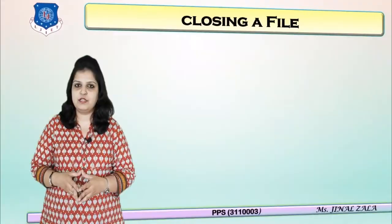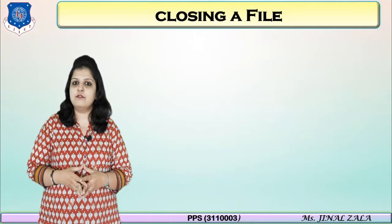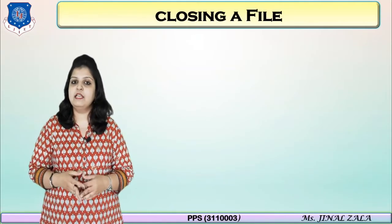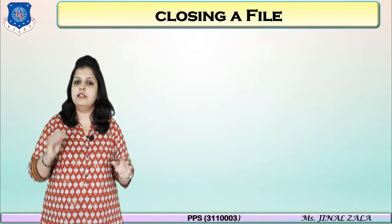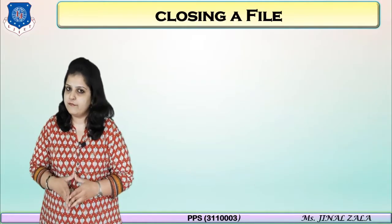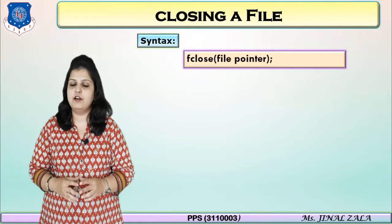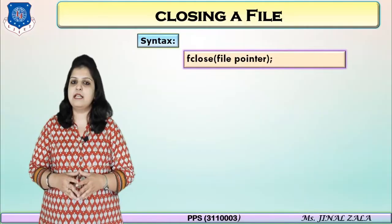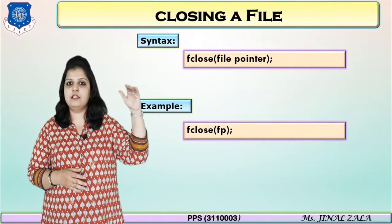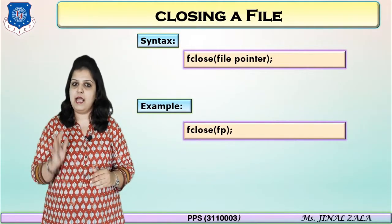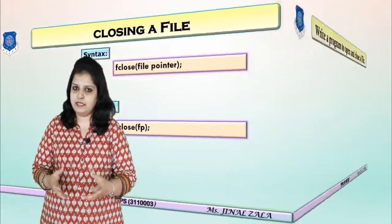Now let's see the next operation: closing a file. Why is closing a file required? If you open any file using a file pointer and complete your task, it is your responsibility to close that file. The function is fclose — write fclose and in the brackets write the file pointer. The example is: fclose(fp). So, when you create a file use fopen, and when your task is completed at the end you must write fclose.